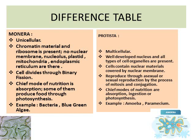Monera is unicellular, meaning only one cell is present. Protista is mainly multicellular but can also be unicellular. In Monera, chromatin material and ribosomes are present but there is no nuclear membrane, and organelles like plastids, mitochondria, and endoplasmic reticulum are absent — making it a very weak cell. In Protista, a well-developed nucleus and all types of cell organelles are present, with nuclear materials covered by a nuclear membrane.